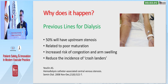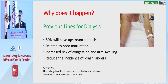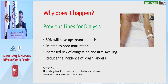Previous lines for dialysis. If you've had a line, you have a 50% chance of upstream stenosis, and that will affect maturation of your fistula. Not only that, a proportion of these patients will get congestion and arm swelling. You need to reduce the incidence of these crash landers — acute renal failure patients who come in, get a line, and then get a subsequent fistula. You need to monitor chronic patients well so that they get a fistula in good time prior to dialysis.